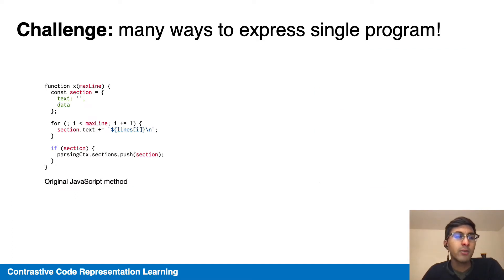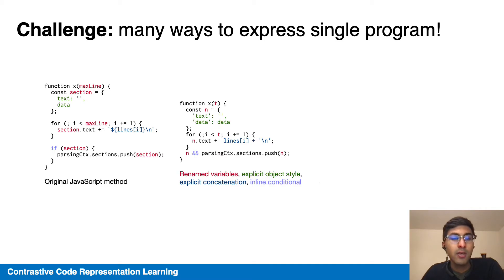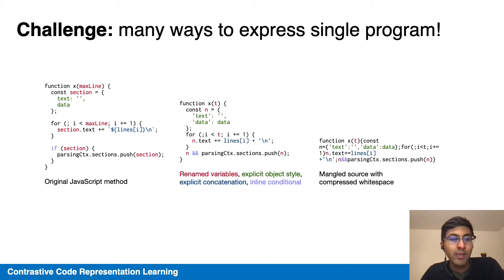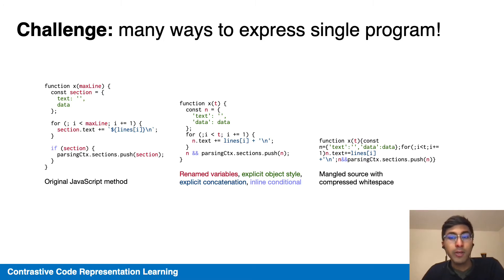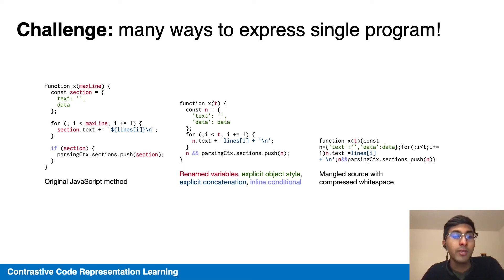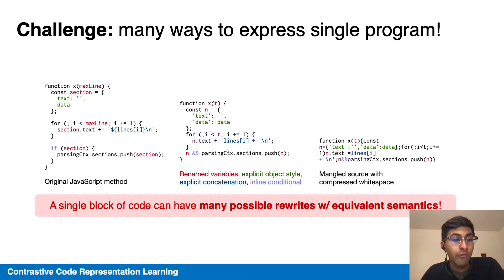However, there are many ways to express a single program. The JavaScript method shown on the left has been written by a person and has particular implementation choices. We can rewrite it into different forms that are equivalent — they have the same exact functionality. However, the textual form is very different. This means that a reconstruction approach like RoBERTa or an autoregressive model like GPT will have to predict all these fine-grained low-level details, like variable names and implementation choices, in order to do well on their pre-training task. A single block of code can have many possible rewrites with equivalent semantics.